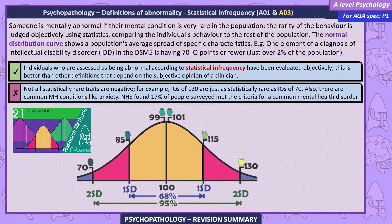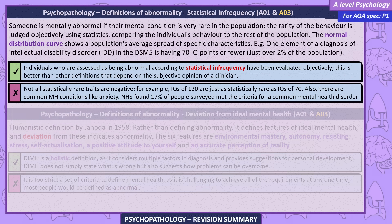Evaluations. Individuals assessed as abnormal according to statistical infrequency have been evaluated objectively, which is better than other definitions that depend on the subjective opinion of a clinician. However, not all statistically rare traits are negative — IQs of 130 are just as statistically rare as IQs of 70. Also, there are common mental health conditions like anxiety; the NHS found 17% of people surveyed met the criteria for a common mental health disorder.